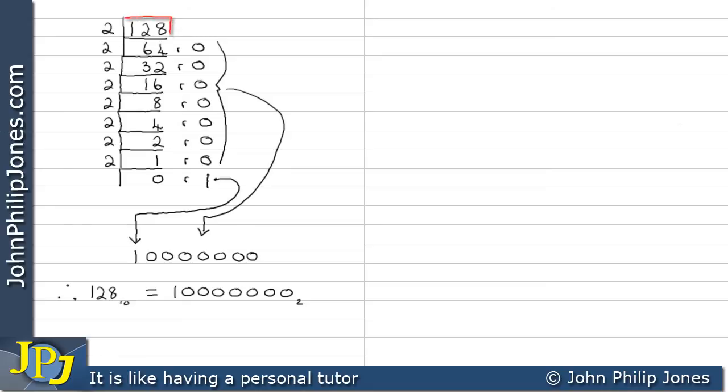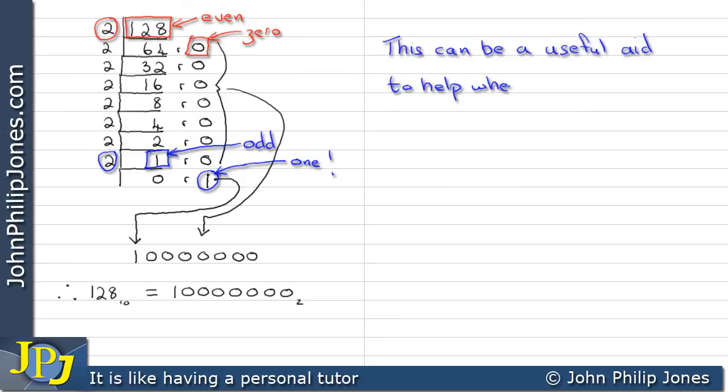Now I won't do another example, but look at this here. When that is an even number and we divide by two, we will get a remainder that is always a zero. Here for example, we can see we have a one and that is obviously an odd number. And when we divide an odd number by two, we get a remainder that will always be a one. This can be a very useful aid when checking our own workings.